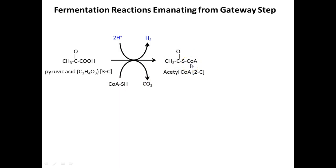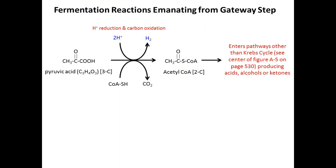Pyruvic acid can pick up acetyl-CoA — this is the gateway step to the Krebs cycle. But if you can't go to the electron transport chain, there's no point entering the Krebs cycle because those 10 NADHs and 4 FADHs would have nowhere to go. However, organisms can use different steps of the Krebs cycle and generate different products, dumping off electrons there. In doing so they produce a whole slew of products — these are just some of the pathways.